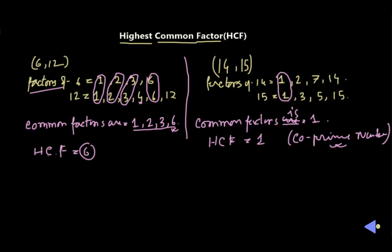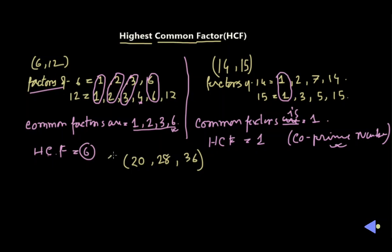Let us take another example with 3 numbers, and here we use the prime factorization method. Prime factorization can be done in two ways: one is individually dividing the numbers, or by the continuous division method taking all the numbers together. Here we have taken the numbers 20, 28, and 36. We divide them individually to find the prime numbers.